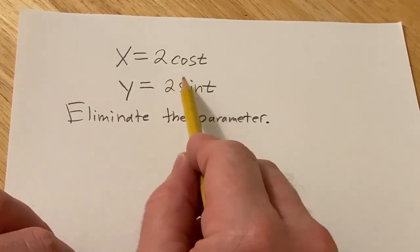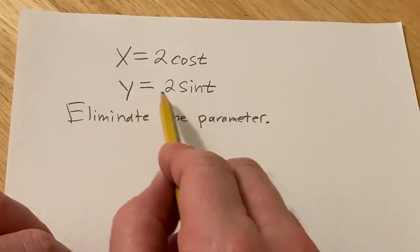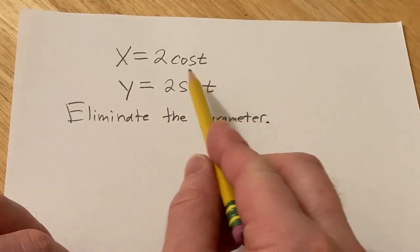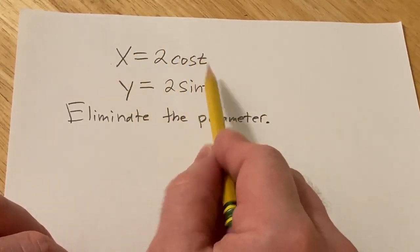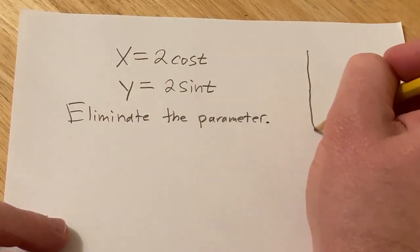So these are called parametric equations and these are actually the parametric equations of a circle of radius 2 centered at the origin. So as t varies, for each choice of t that you plug in you're going to get an ordered pair that lies on that circle, so let me just show you really quickly.